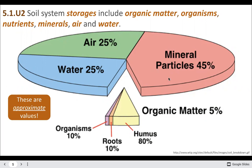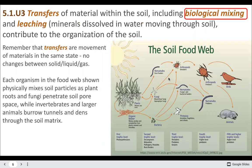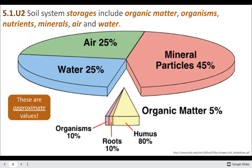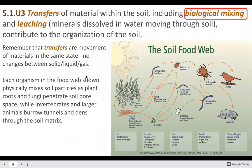A rough breakdown of relative proportions — different soils might have different amounts. If your soil is more compact, you might have less air and potentially less water. In the desert, very little water in the soil, though if you go deeper, sometimes you can find a little moisture trapped down there.